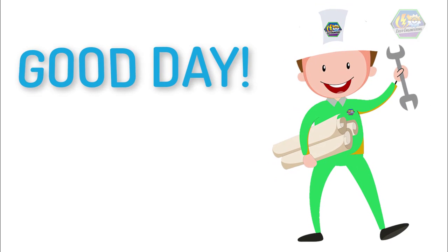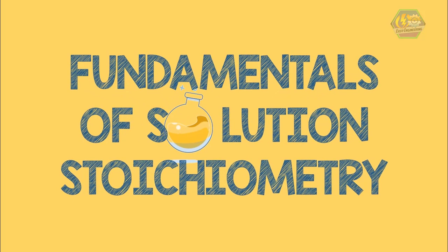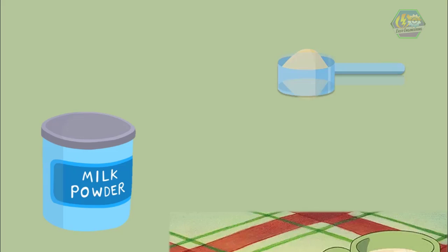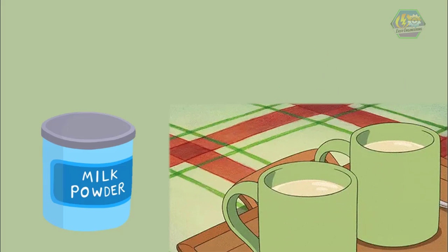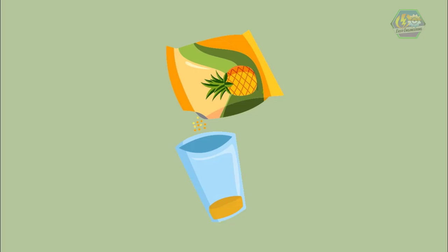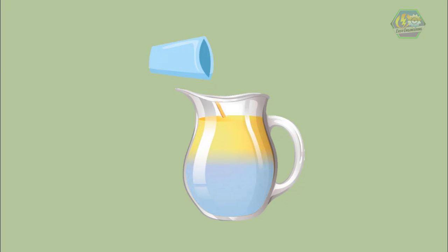Good day learners, this is Easy Engineering. This time we're going to talk about fundamentals of solution stoichiometry. Imagine one instance in your life when you want to drink milk but you have a powdered milk — you get a glass of hot water, pour the powder milk, and stir it with a spoon so that it will be dissolved in the water. Now you have a solution of milk. Or suppose you want to drink pineapple juice but you have a powdered pineapple juice, so you get a glass of water, pour the powdered pineapple juice, stir it, and transfer it into a pitcher to make a 1-liter pineapple juice.